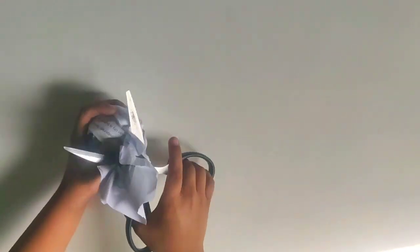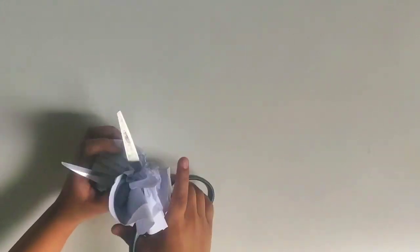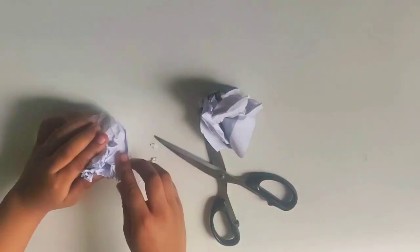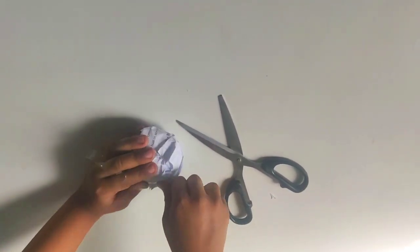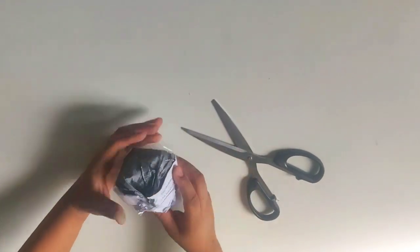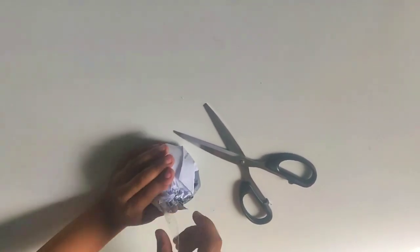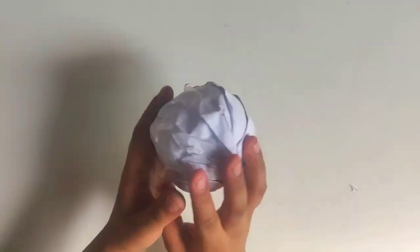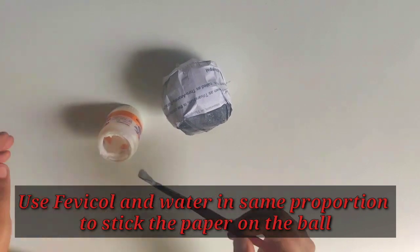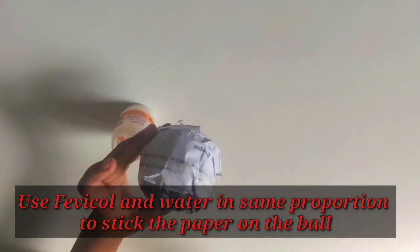Cut the extra waste paper. Use tape to set the paper. Mix glue and water in the same proportion to stick the paper on the ball.